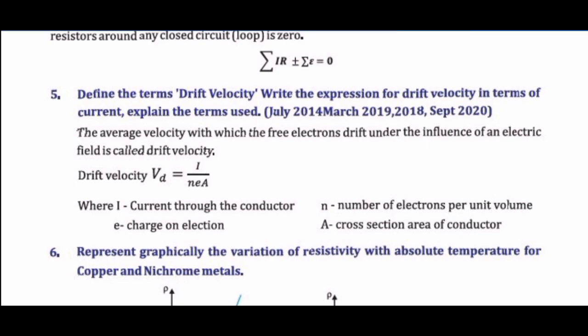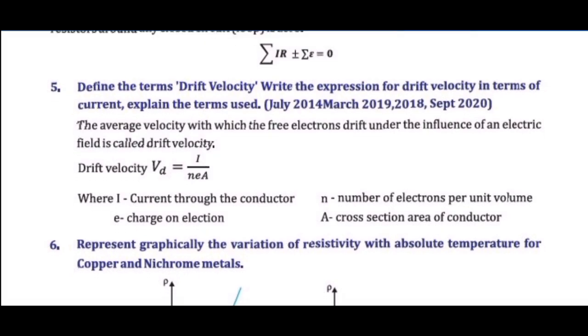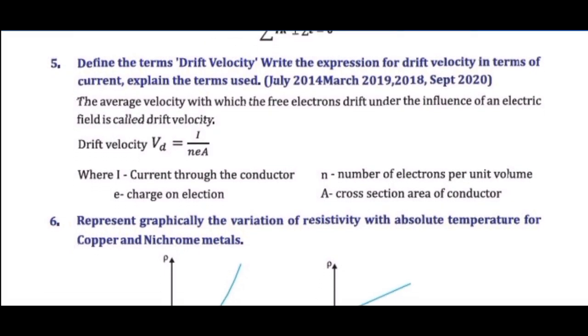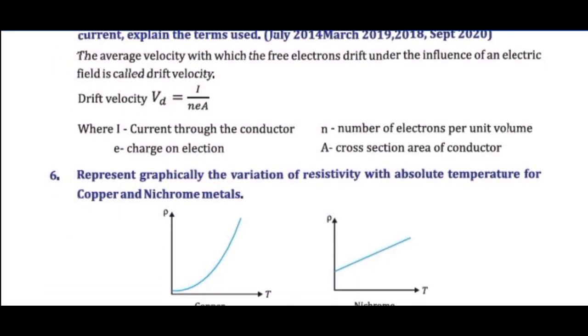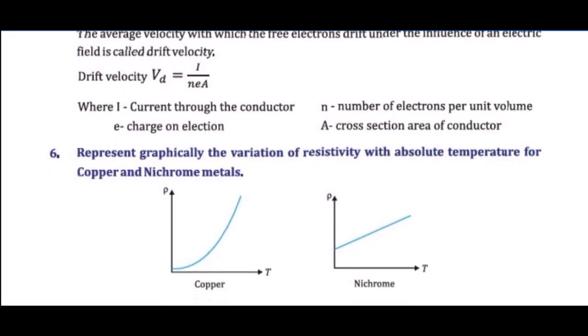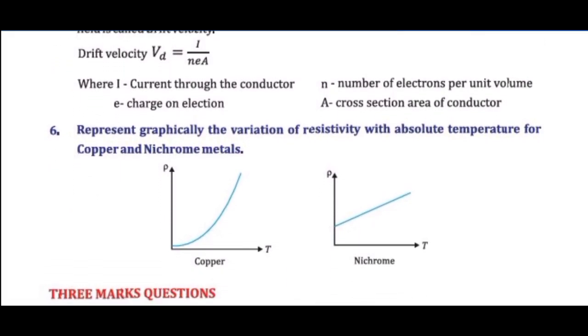Expression: v_d = I / (nAe), where I equals current, n equals number of electrons per unit volume, A equals cross-sectional area of the conductor, and e equals charge of an electron.